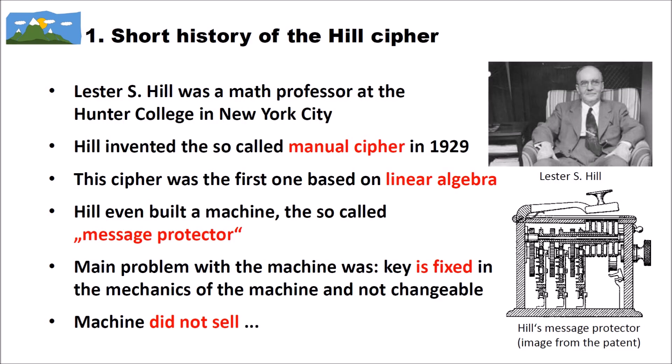The Hill cipher was invented by a math professor named Lester S. Hill, who worked at Hunter College in New York City. Hill invented the cipher named after him in 1929. The Hill cipher was the first one based on linear algebra, and the professor even built a machine called the message protector, which implemented his cipher.